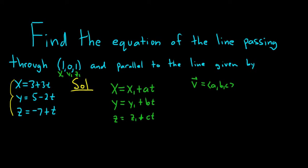Well, our line is parallel to the line that has these symmetric equations. So you see here a is 3, b is negative 2, and c is 1.